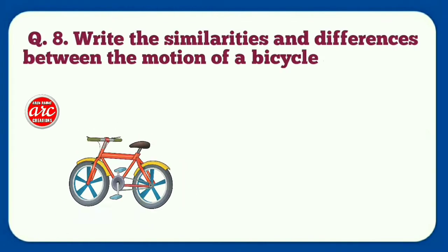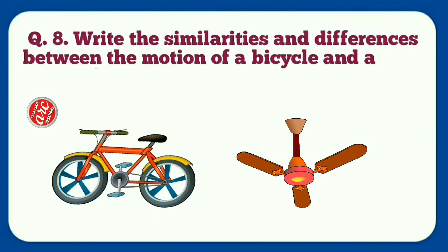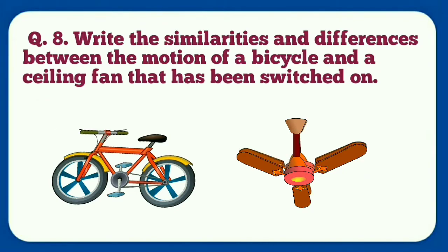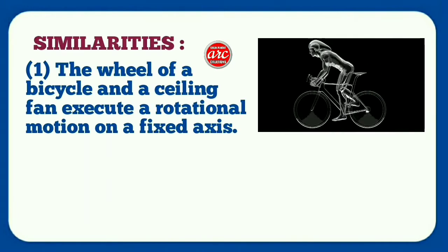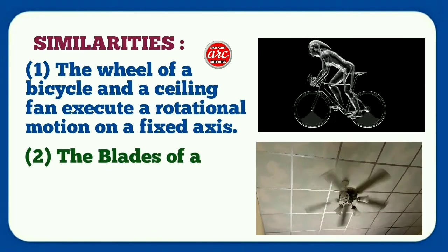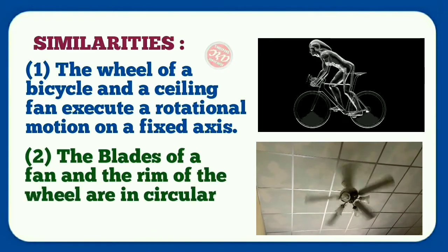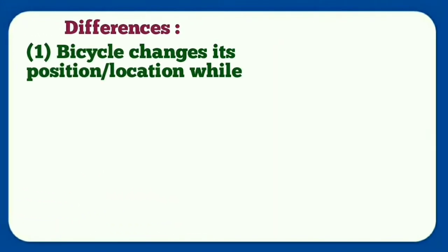Question number eight: Write the similarities and differences between the motion of a bicycle and a ceiling fan that has been switched on. Answer: Similarities: Number one, the wheel of a bicycle and a ceiling fan execute a rotational motion on a fixed axis. Number two, the blades of a fan and the rim of a wheel are in circular motion.